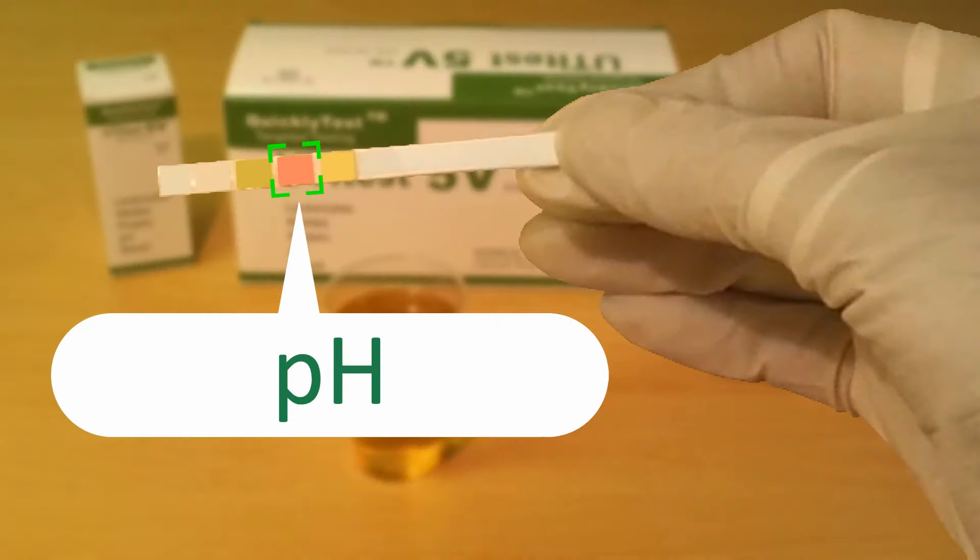The fourth reagent from the top is the urine pH indicator. Any result below 7 indicates that you have acidic urine, whilst the result above 7 means that your urine is alkaline, 7 being neutral.